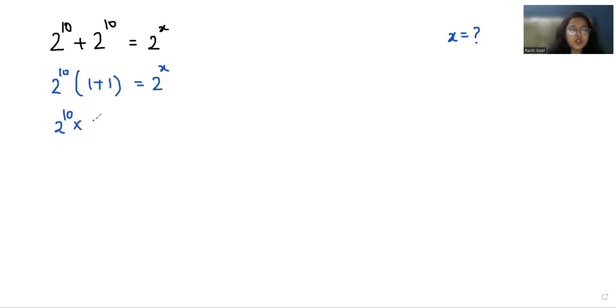Or we can write it as 2 power 10 times 2 power 1. Now using the exponent rule x power m times x power n, we can write it as x power m plus n.